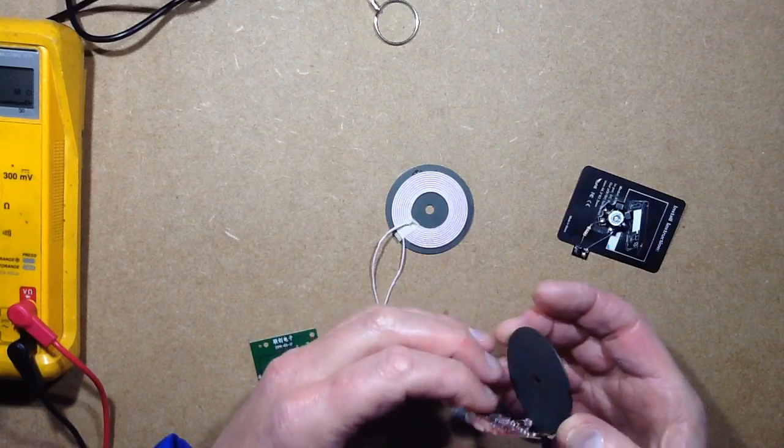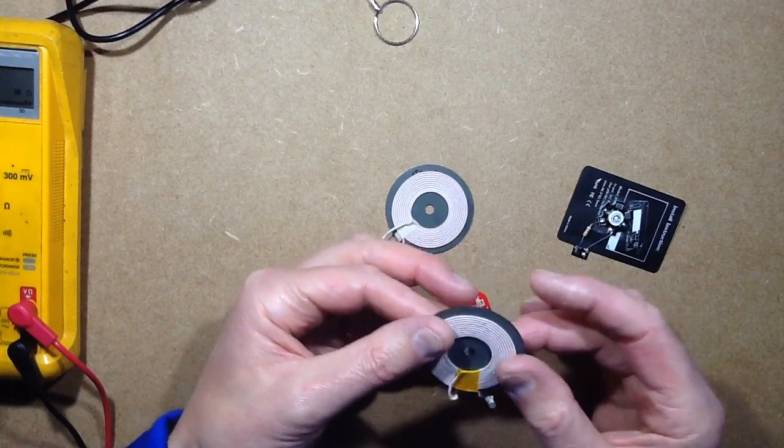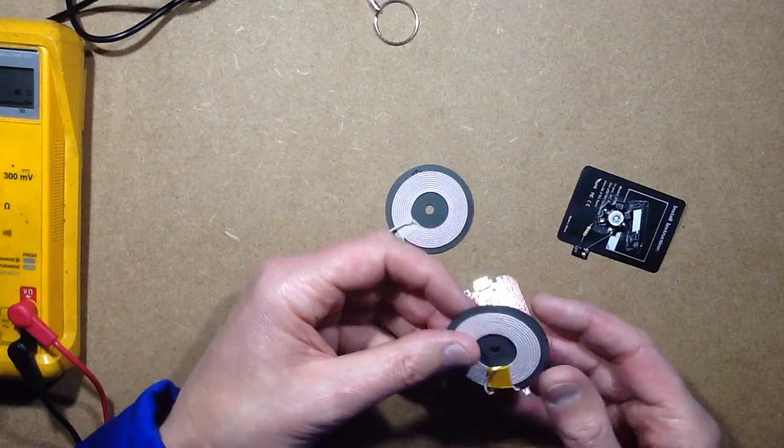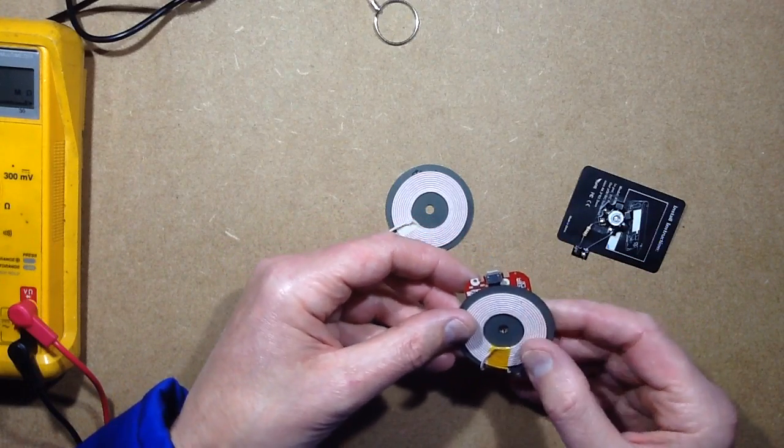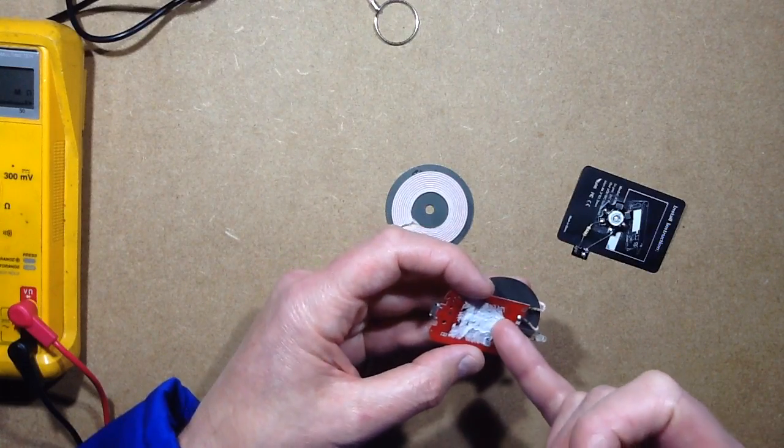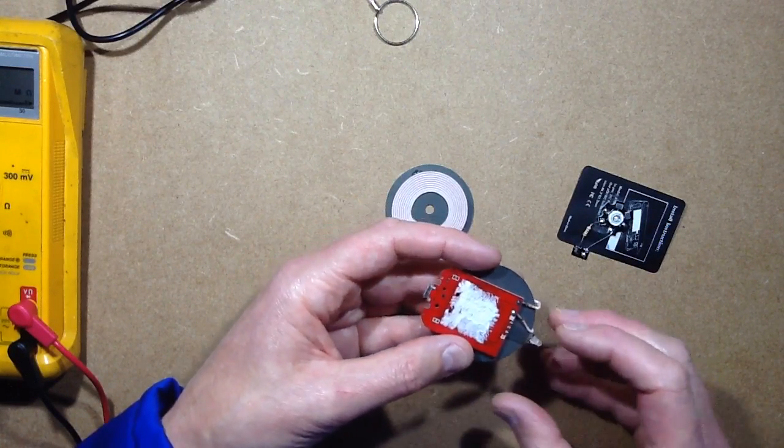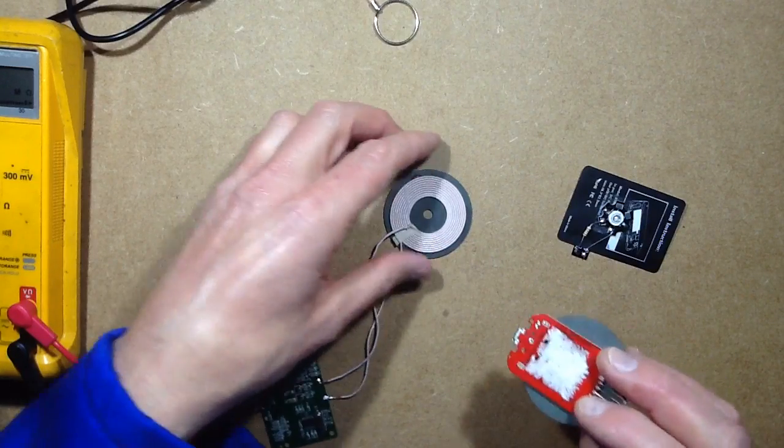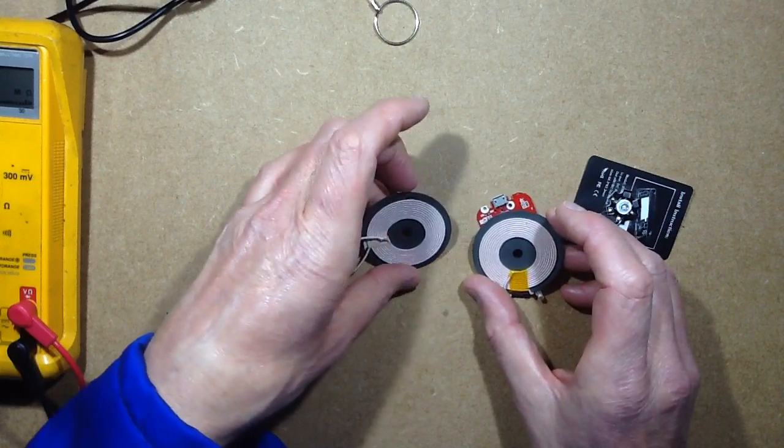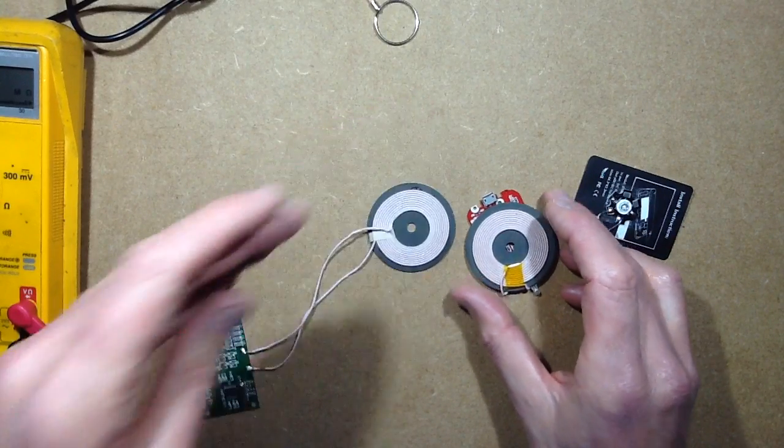The ferrite back basically forms the core of the transformer, and then you've got the coil on it. This is really quite a heavy coil. This had a really annoying double sided sticky pad that's very hard to remove on the back of it. The coils are just fundamentally the same, they must come from a common manufacturer.